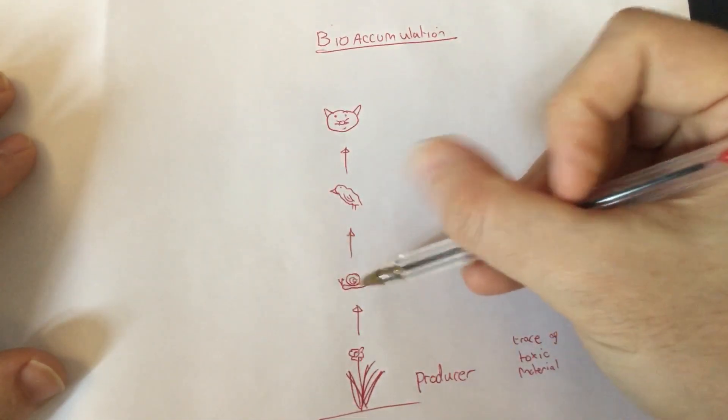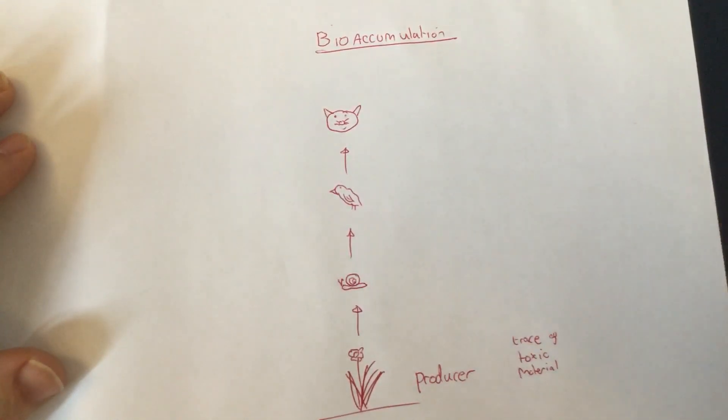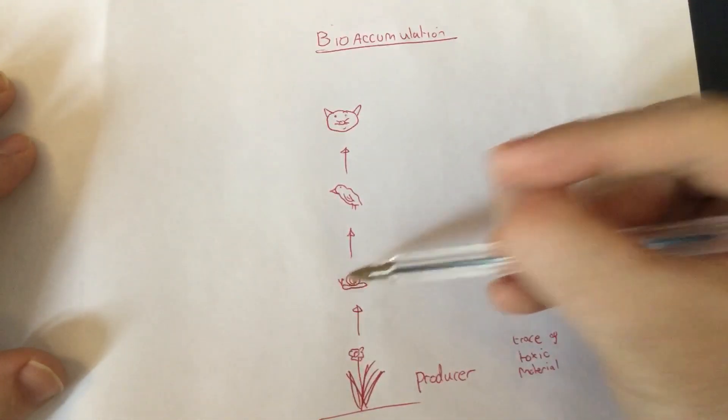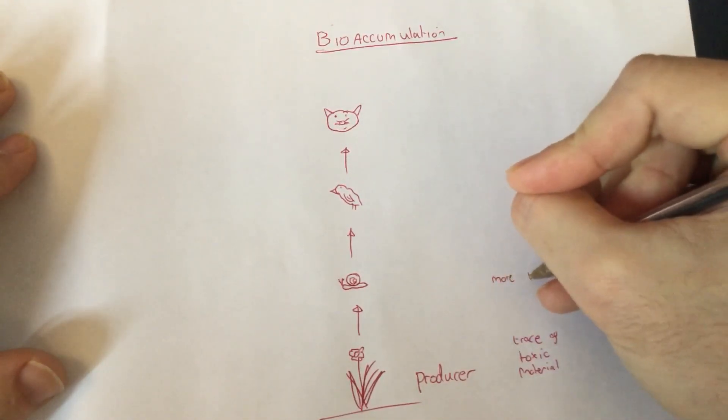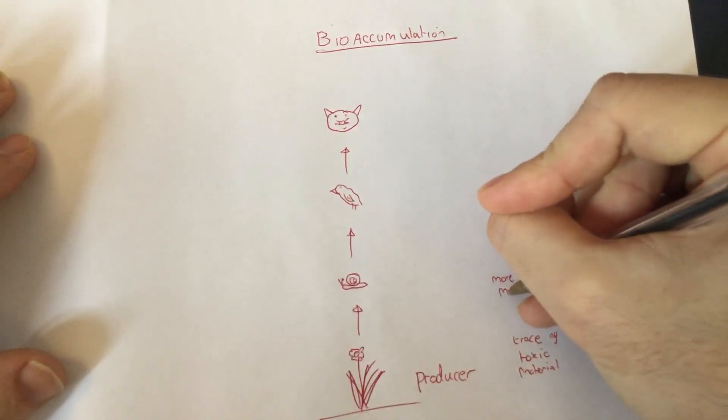When the snails eat that they are concentrating or accumulating that toxin in their bodies because they eat an awful lot of this and it concentrates the toxins in their body. So we start to get more toxic materials.